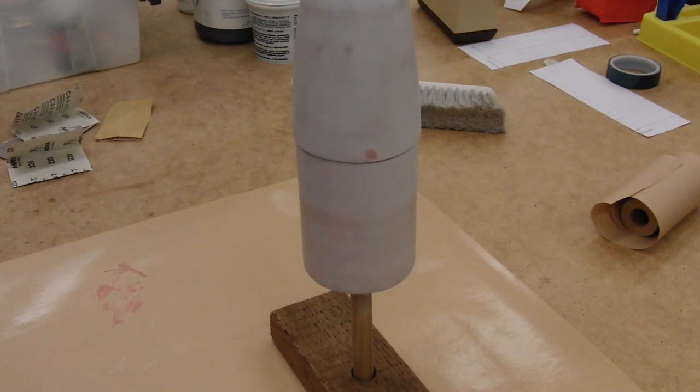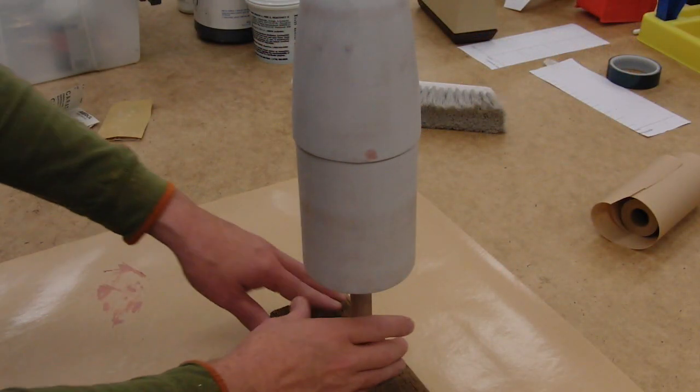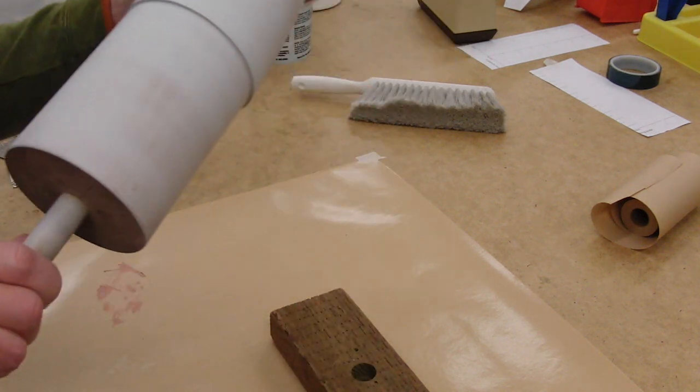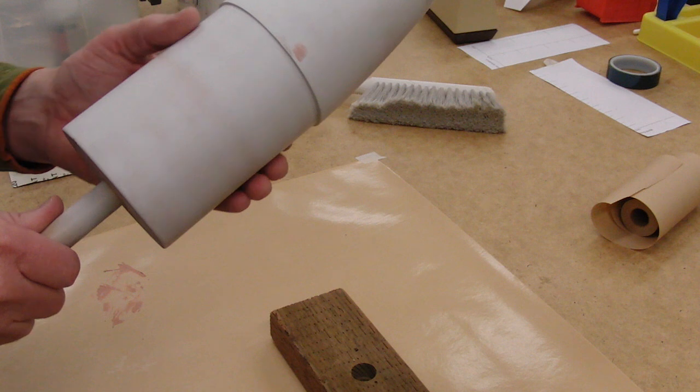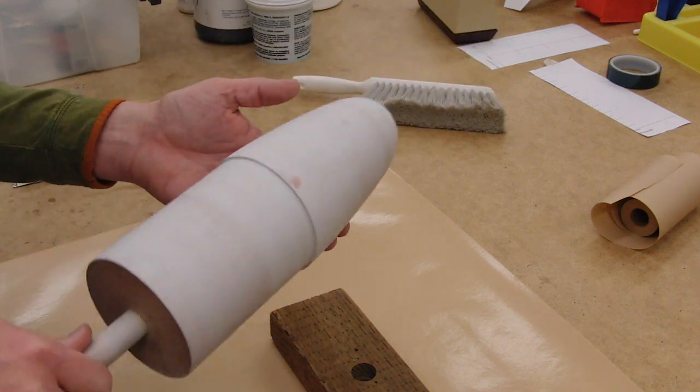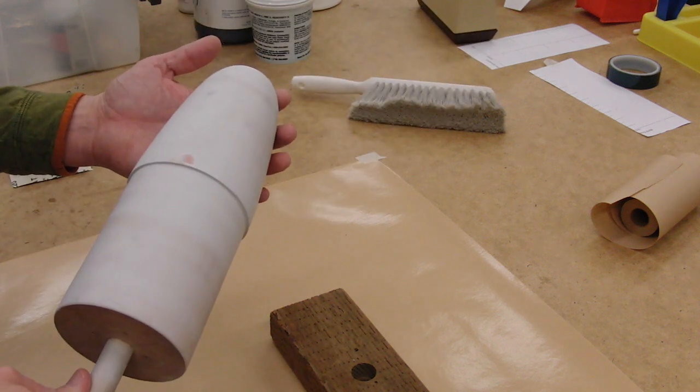And then once we've completed our wet sanding, we can dry off the plug. Make sure it's smooth everywhere, which you can tell really easily by feel. And we have a nice usable plug.